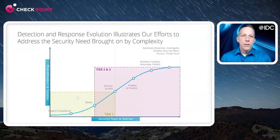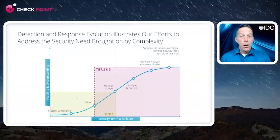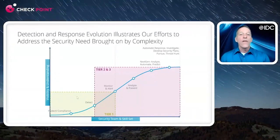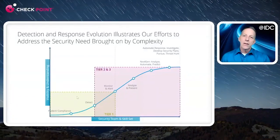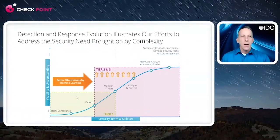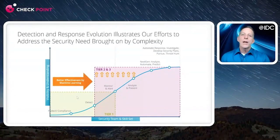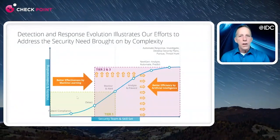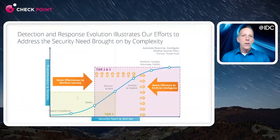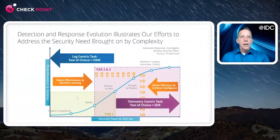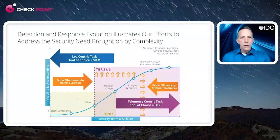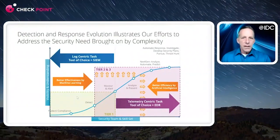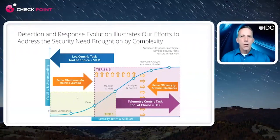Then it got more complex again, so we added automated analysis, predictive capabilities, and automated response. Threats became so hard to find that we started threat hunting — we couldn't wait for alerts, we had to go find them. We added machine learning for scale, AI to uplevel tier one SOC analysts to do tier two work. Then we added more tools: SIEM for log-centric tasks, EDR for endpoint-centric tasks. What started as something simple is now riddled with complexity.